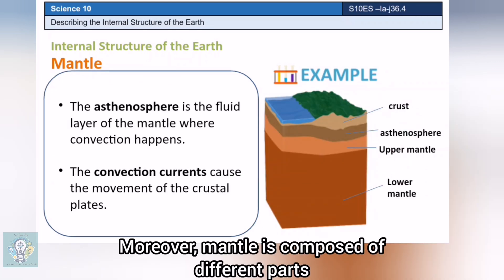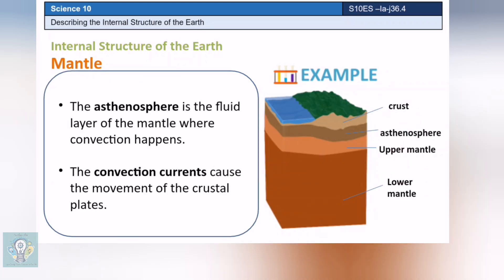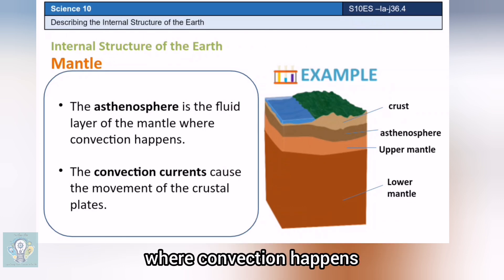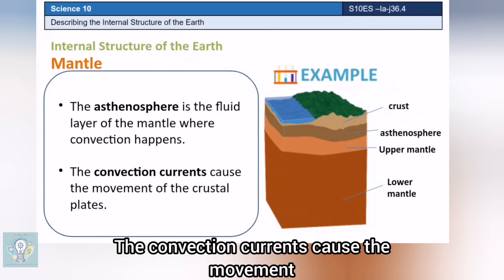Moreover, the mantle is composed of different parts: asthenosphere, upper mantle, and lower mantle. The asthenosphere is the fluid layer of the mantle where convection happens. The convection currents cause the movement of the crustal plates.